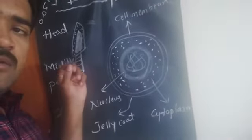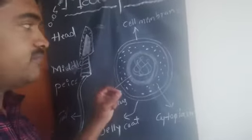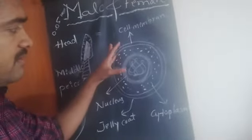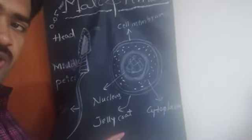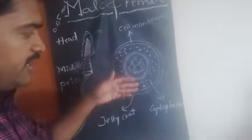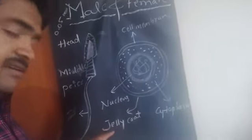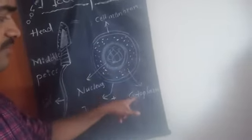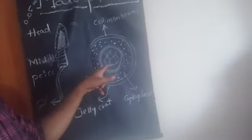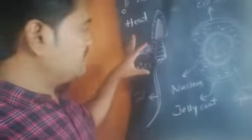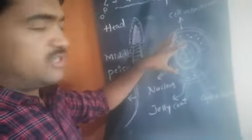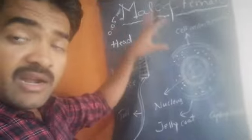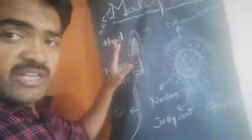The female sex cell is the egg. It is a circular or spherical shaped structure covered with two layers: the first layer is a jelly coat and the second layer is the cell membrane. Inside we can also see the cytoplasm and the nucleus. Compared to the sperm, the egg is very large — it is a hundred times bigger than the sperm.